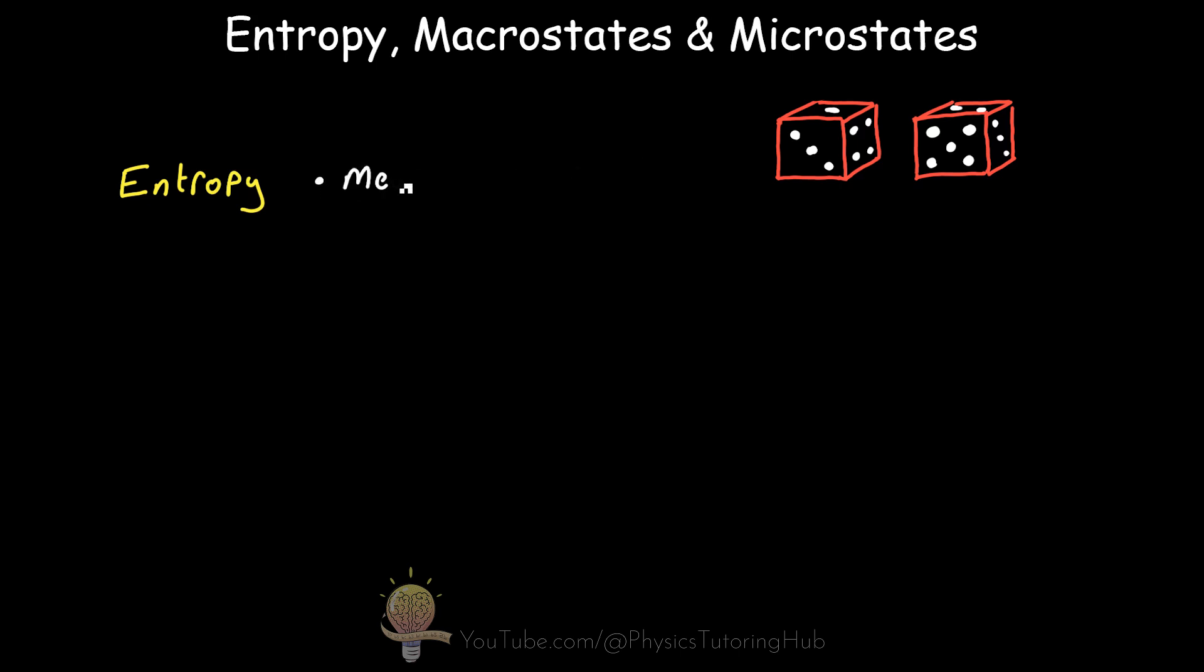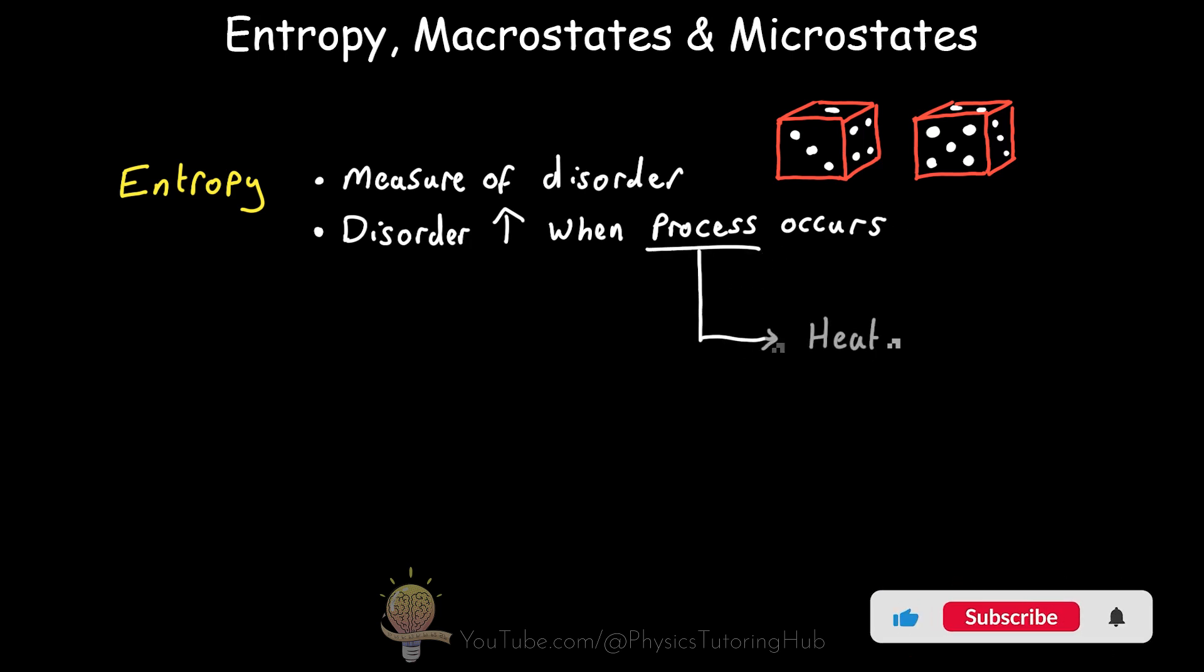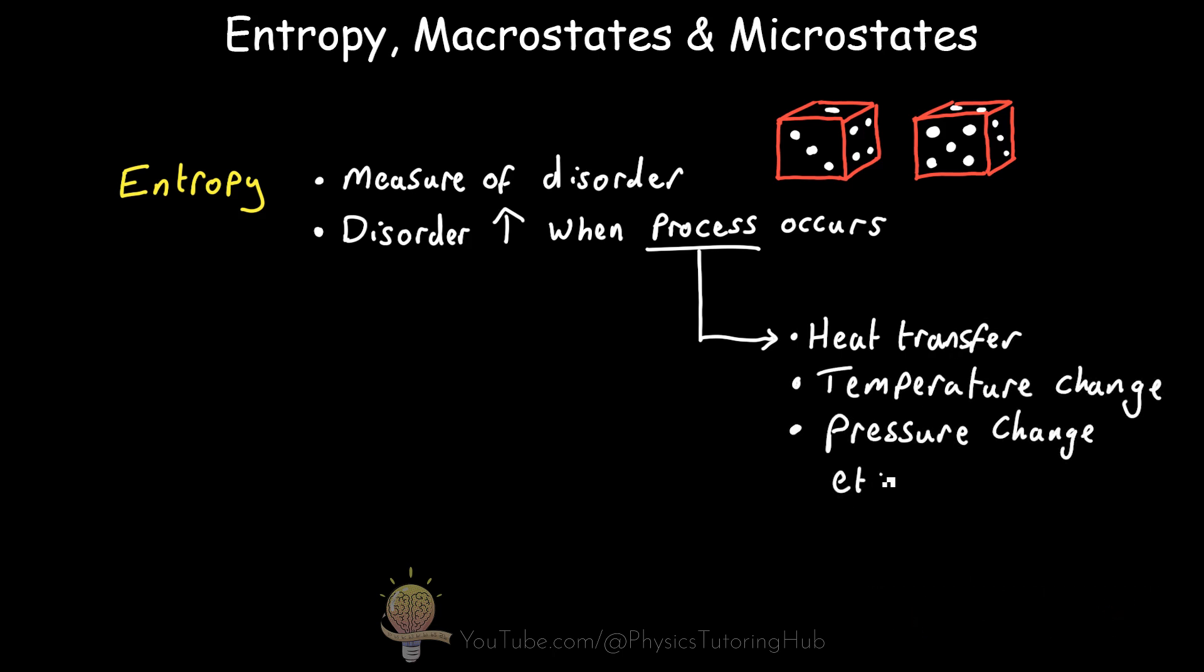Entropy is a measure of disorder within a system. This disorder increases in isolated systems whenever a process occurs. A process is any event that alters the state of the system, for example, a temperature or pressure change or heat transfer and so on.